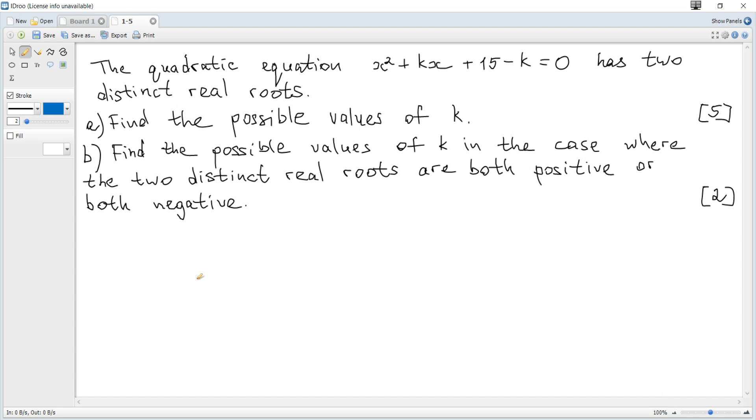The quadratic equation x² + kx + 15 - k = 0 has two distinct real roots. Question A: Find the possible values of k.